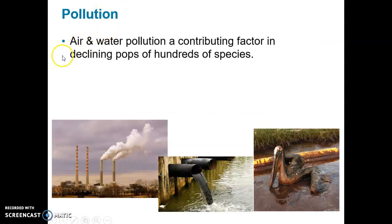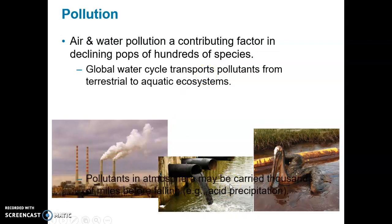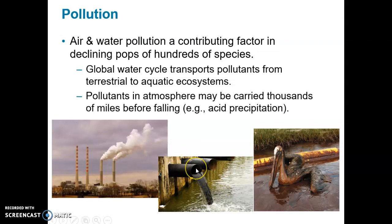Pollution is pretty straightforward. Air and water pollution are a contributing factor to declining populations of hundreds of species. Sometimes the impact is immediate, like with an oil spill, and sometimes the impact is slower but long-term, with increasing levels of pollutants in the environment. The global water cycle transports pollutants from terrestrial to aquatic ecosystems, distributing them worldwide. Pollutants in the atmosphere can be carried thousands of miles before falling as precipitation, and some can fall as acid rain, which can harm and outright kill plants and animals.